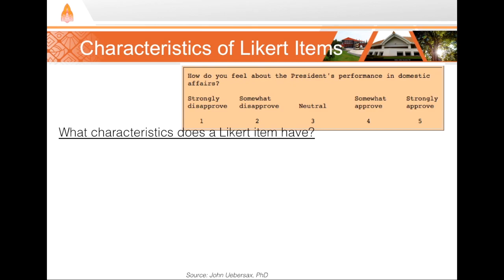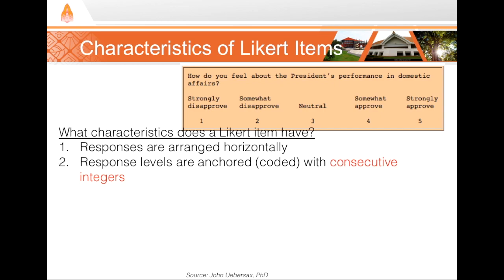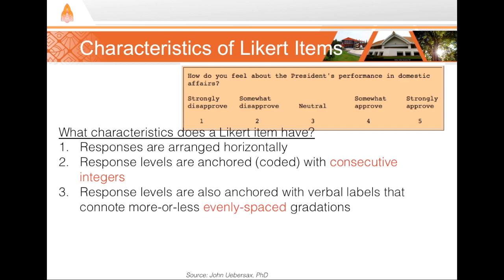What makes a question a Likert item? Let's look at its characteristics. First, the responses are arranged horizontally. Second, each possible choice has a consecutive integer assigned to it — one, two, three, four. Third, the verbal labels are considered to have meanings that are evenly spaced; for example, the step from strongly disapprove to somewhat disapprove is about the same as the step from somewhat approve to neutral.